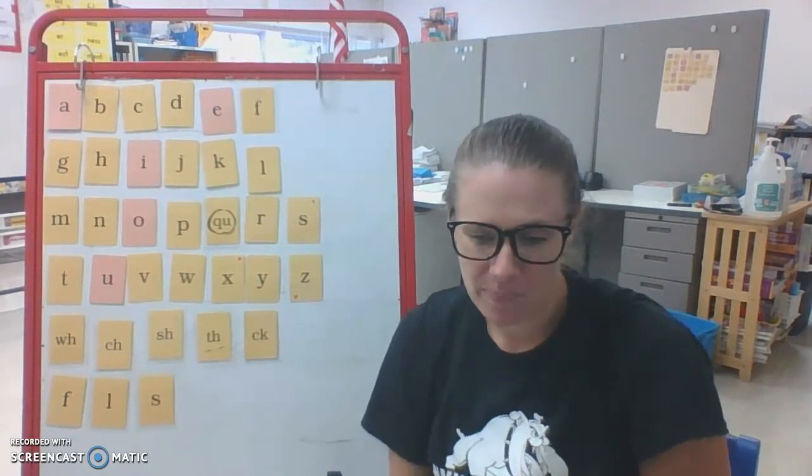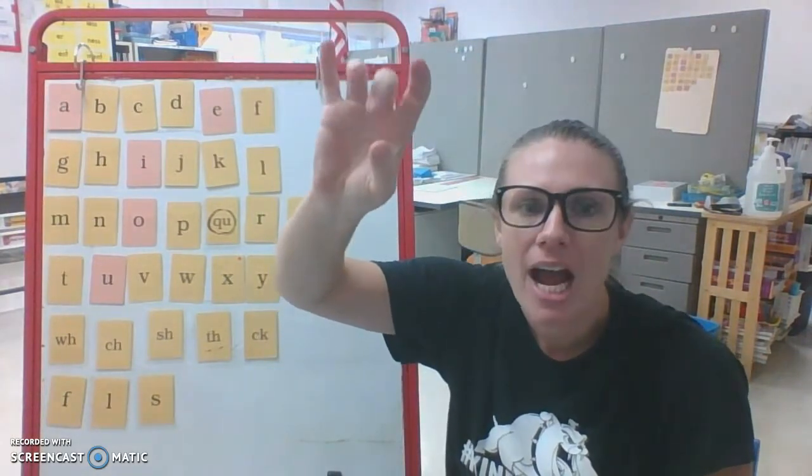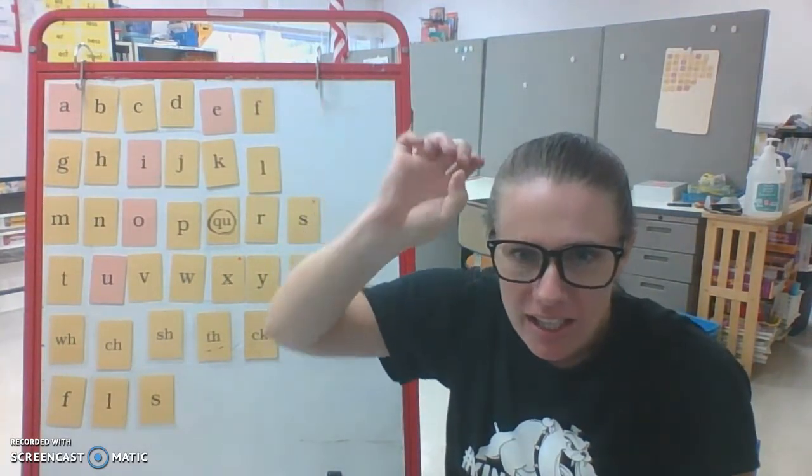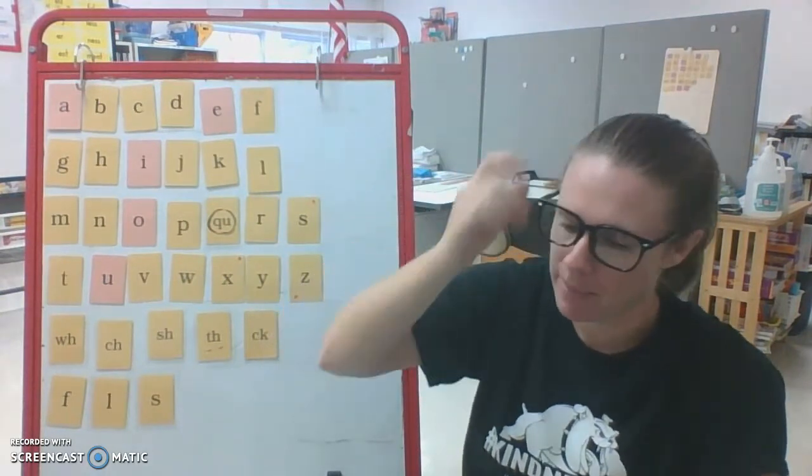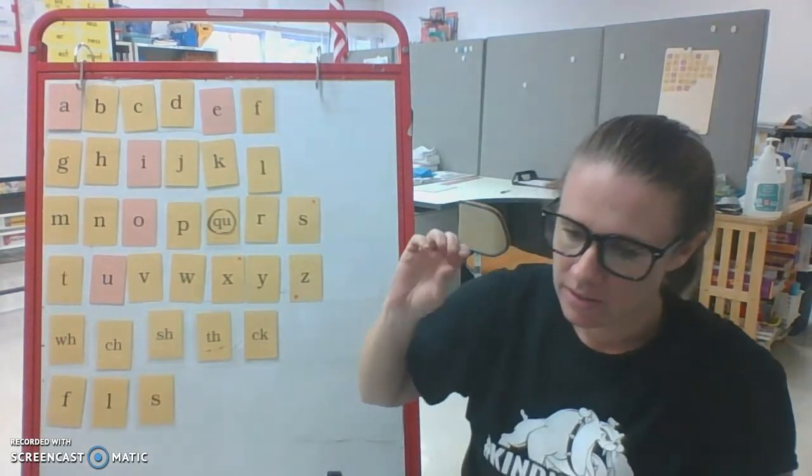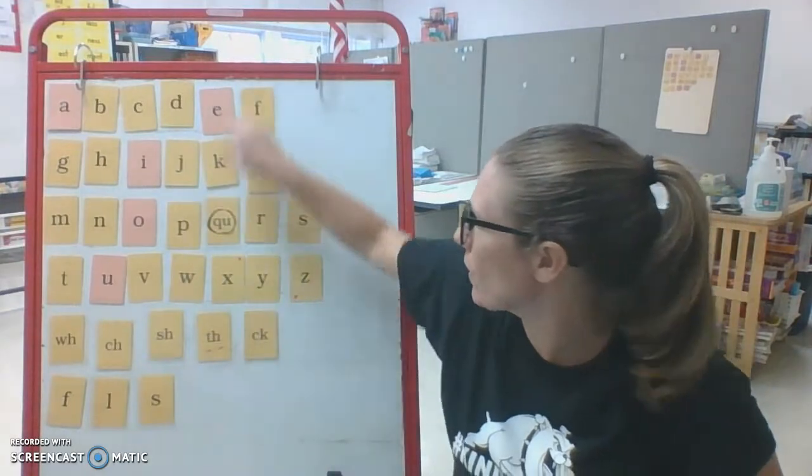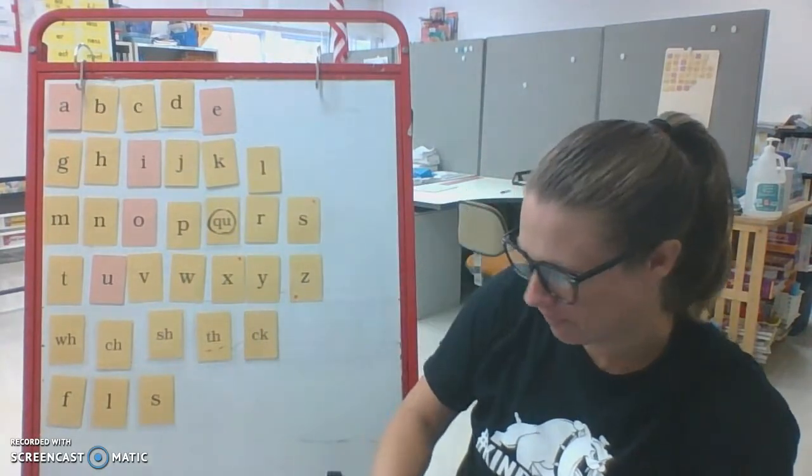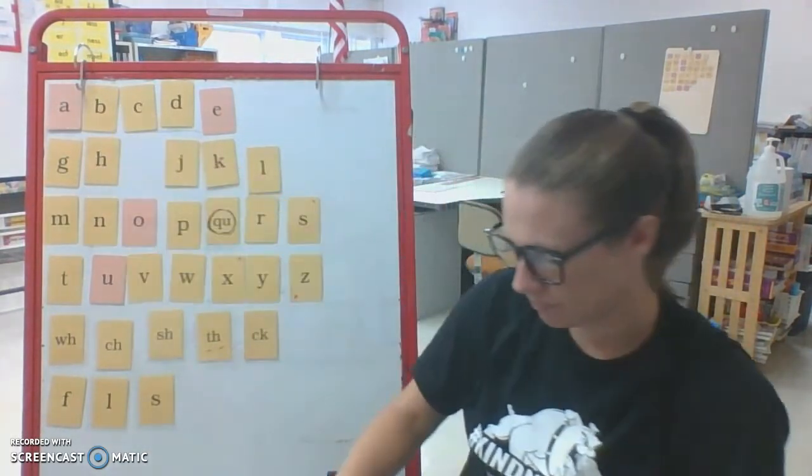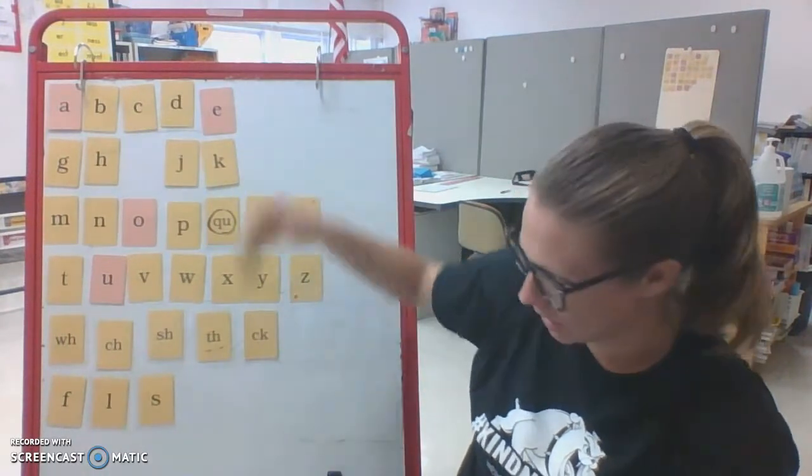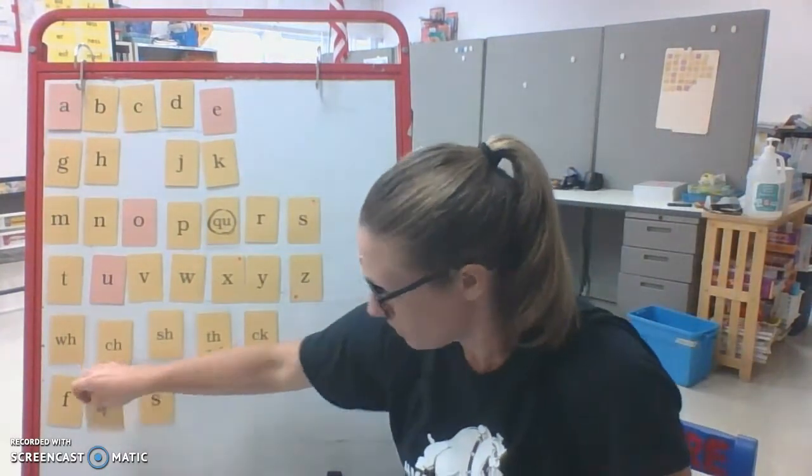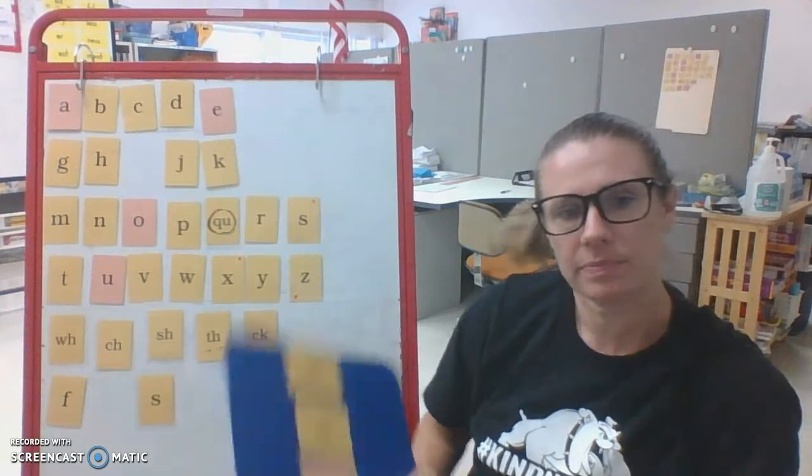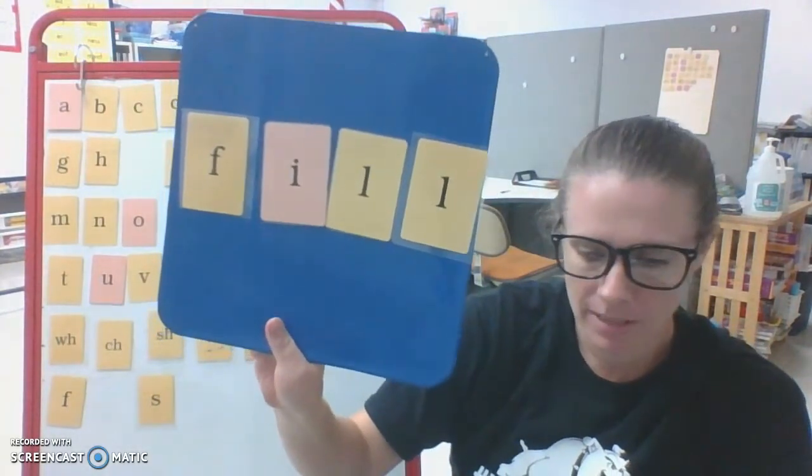Repeat after me. Fill. Tap it with me. F, I, L. Three taps. Think about how many letters. Okay, go ahead and build your word fill. Fill. F, I, L, L. And when you're done, you can check it with mine.